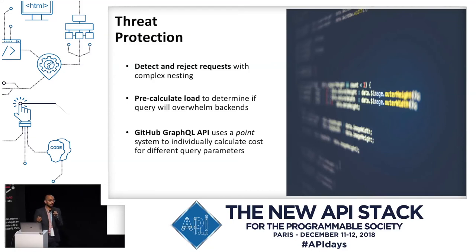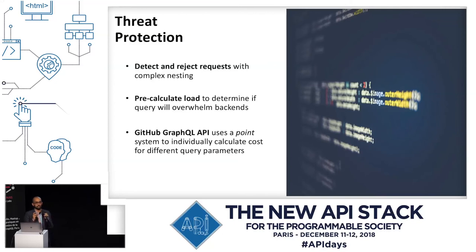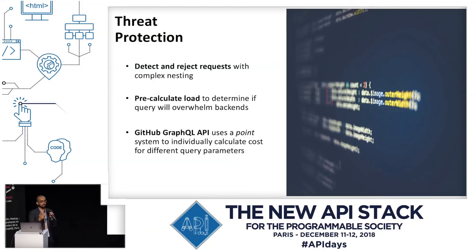A great example of this is GitHub's GraphQL API. They have this concept of nodes, and their V4 API documentation tells you, as you walk through the different levels of data returned, what the overall node size calculation is. Based on the number of nodes calculated, you can either make that call or reduce the number of nodes you're returning. They even provide an API that allows you to pre-query to see if you'll be within the allowable limit.